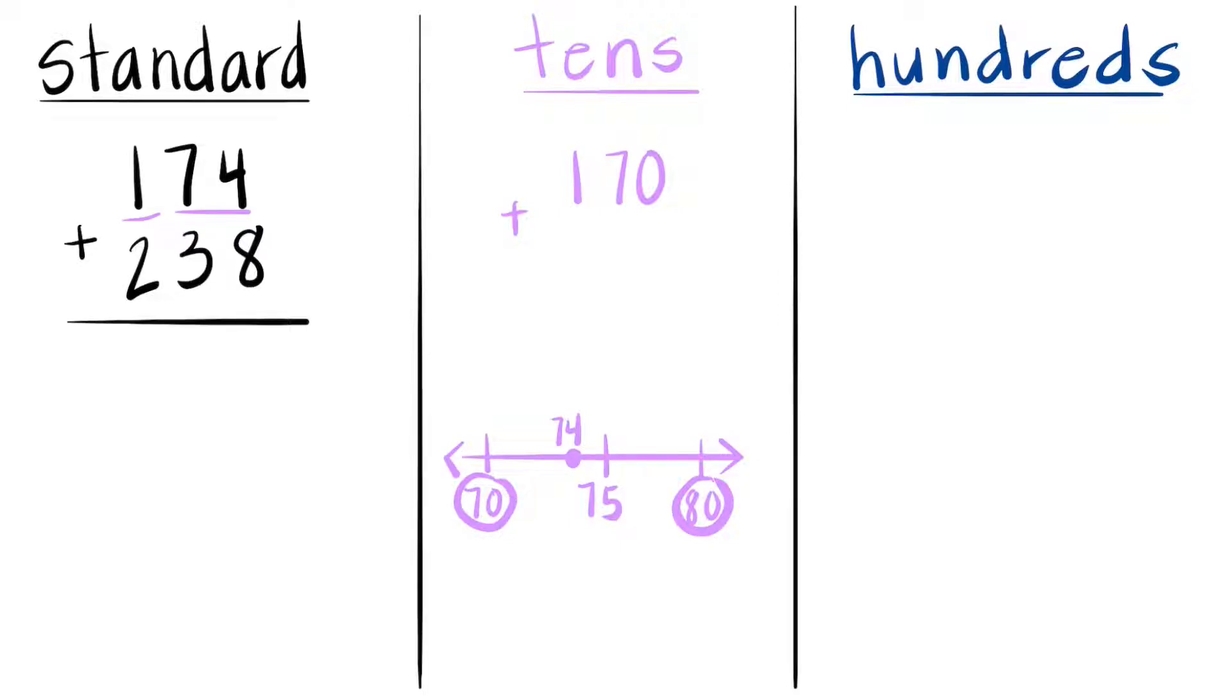Now we need to round 238, but we're only looking at the 38 because we're working with our tens. So if we have 38 on our number line, the two tens around 38 are 30 and 40, and halfway would be 35. Now 38 would be after 35. So is 38 closer to 30 or 40?